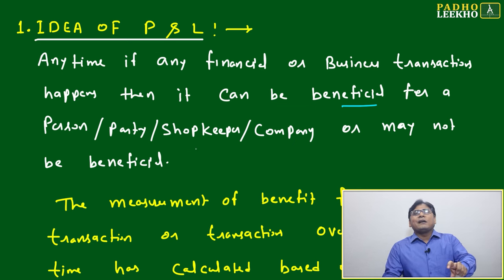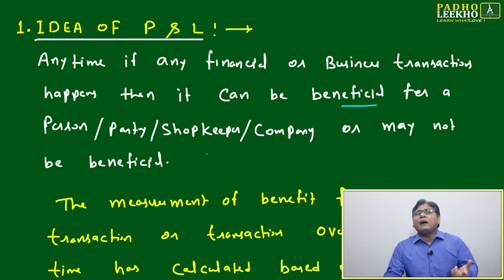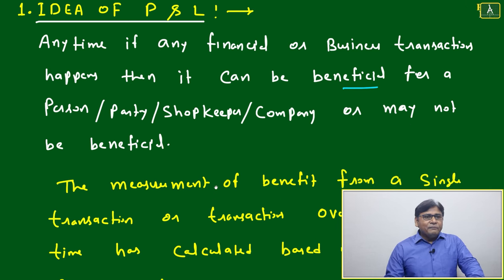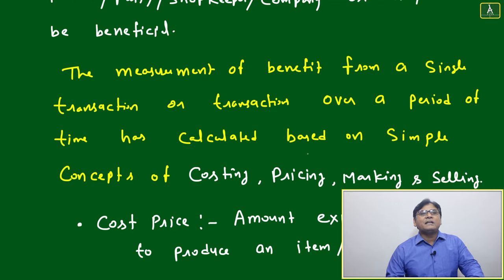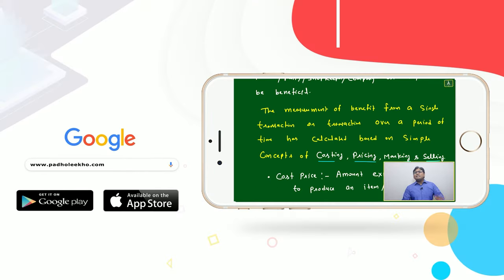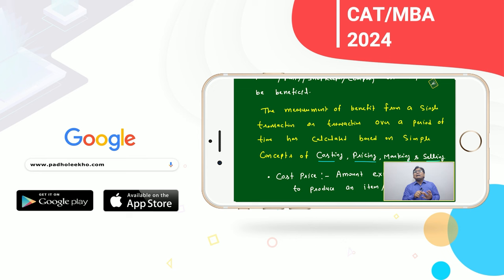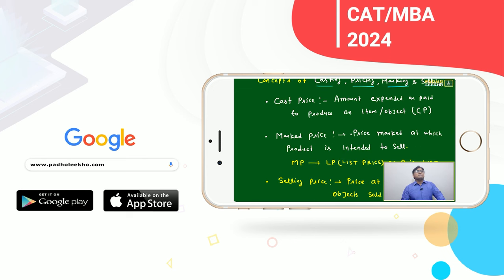Finally, the measurement of benefit from a single transaction or transactions over a period of time is calculated based on four simple concepts: costing, pricing, marking, and selling. These four activities are what we do during any business transaction, and you have to keep them in mind.